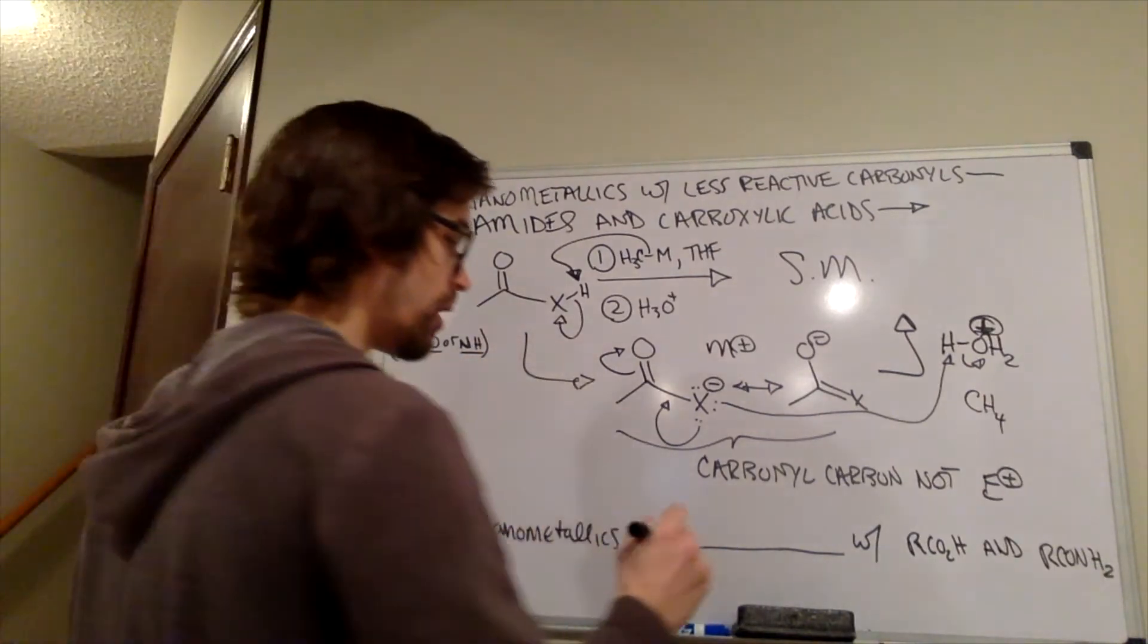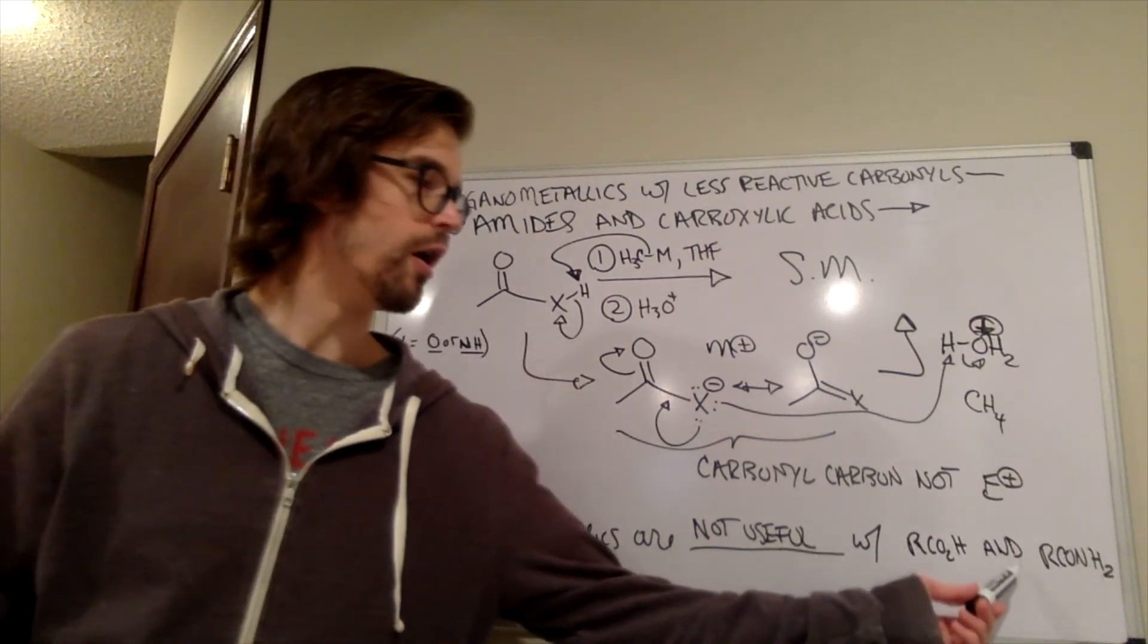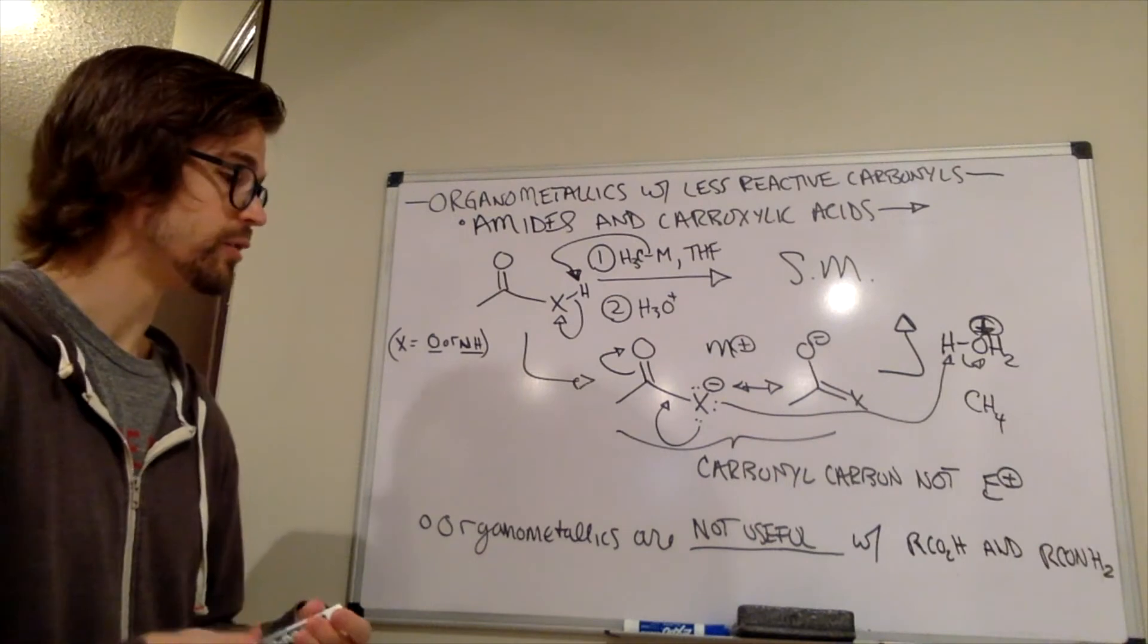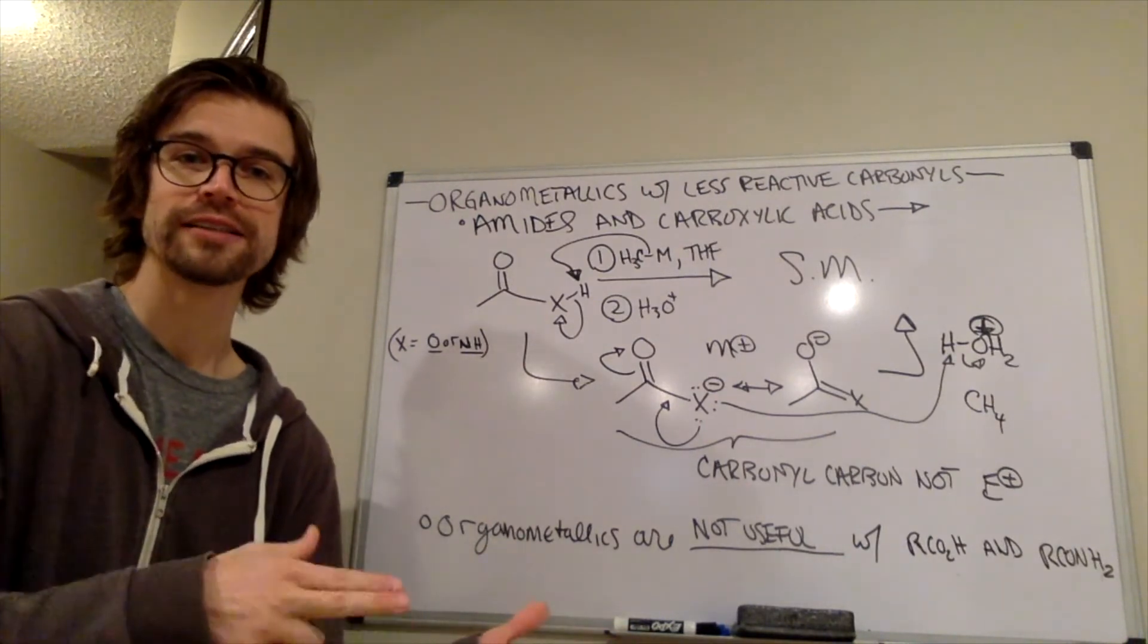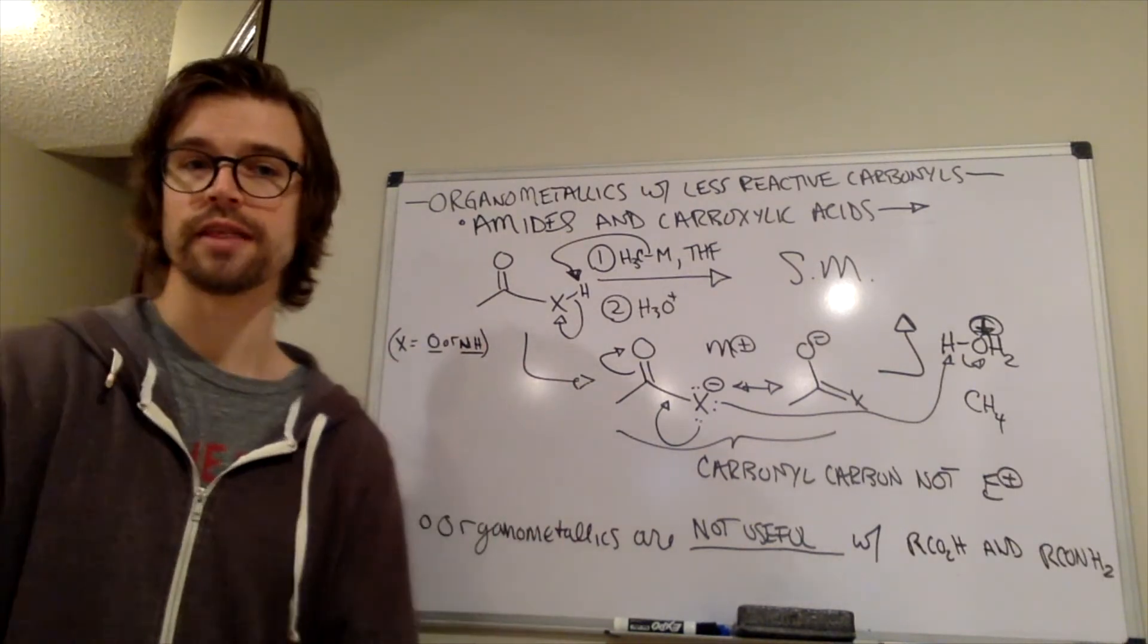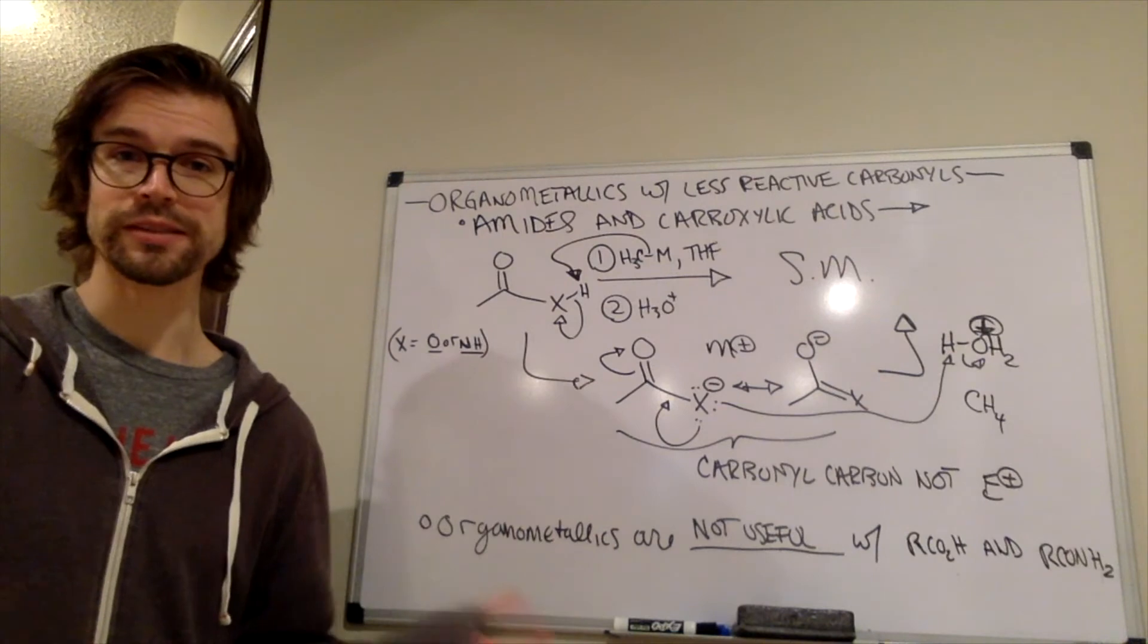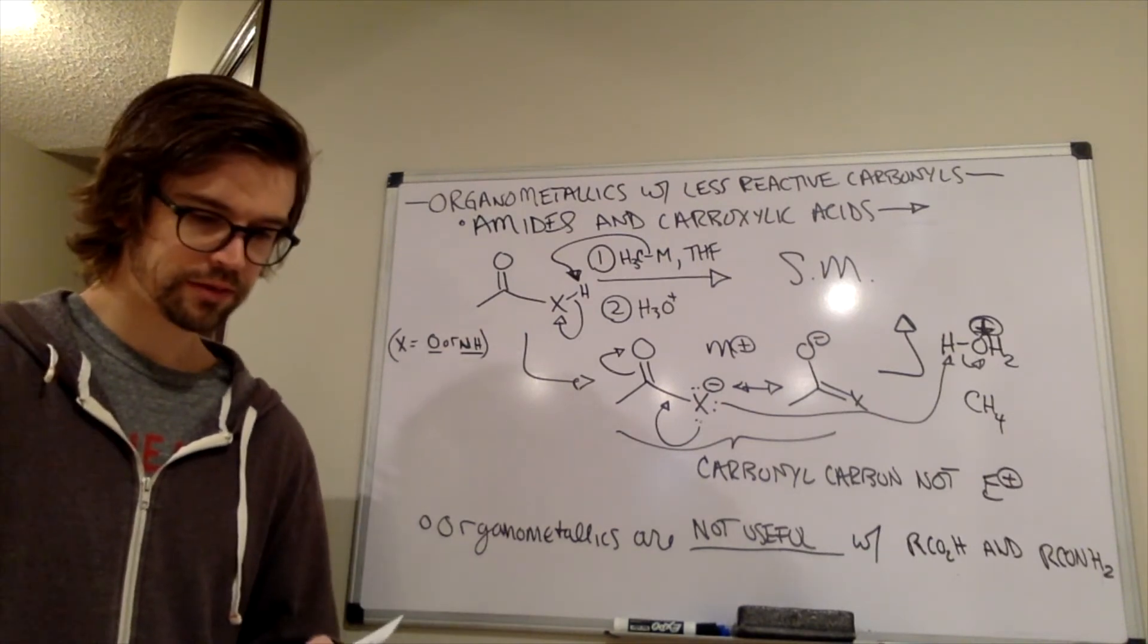So essentially organometallics are not useful with our CO2Hs, so that's carboxylic acids, and our CONH2s, those are amides. We would not use these organometallics with those types of functional groups. So that kind of finishes out the utility of these organometallics. So they're good at making carbon-carbon bonds, which is really exciting because we're organic chemists, so we want to make those carbon-carbon bonds. They're really good for reacting with aldehydes and ketones. They're really good with reacting esters and acid chlorides, but their weakness is that acid-based chemistry liability. They can't add to anything if there's acidic protons around, and if there's acidic protons in the actual functional group itself, that's going to make them no longer reactive as we just mentioned.